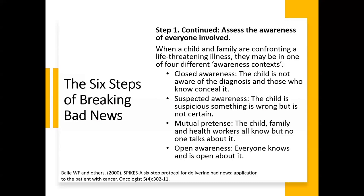When a child and family are confronting a life-threatening illness, they may be in different awareness contexts. Closed awareness is where the child is not aware of the diagnosis and those who know conceal it. Suspected awareness is where the child suspects something is wrong but is not certain. Mutual pretense is where the child, family, and healthcare workers all know but no one talks about it. Open awareness is where everyone knows and is open about it. Once everyone has reached open awareness, it is the right time to share the news.